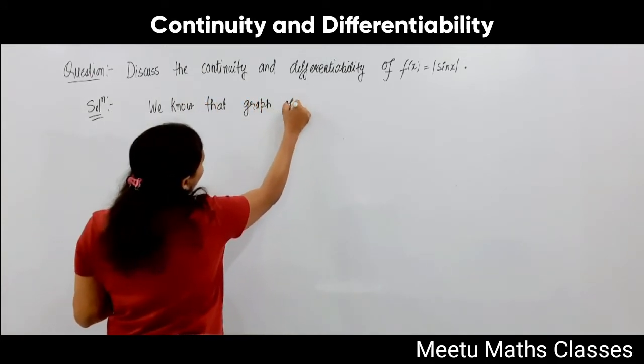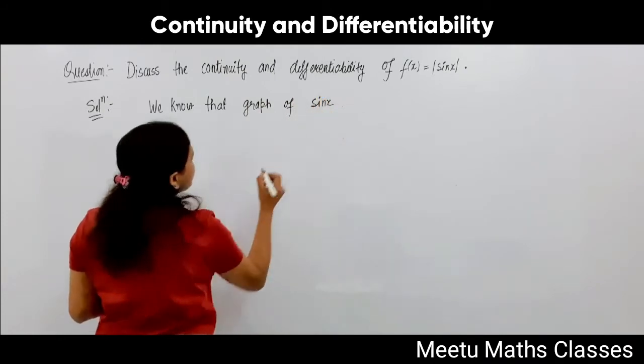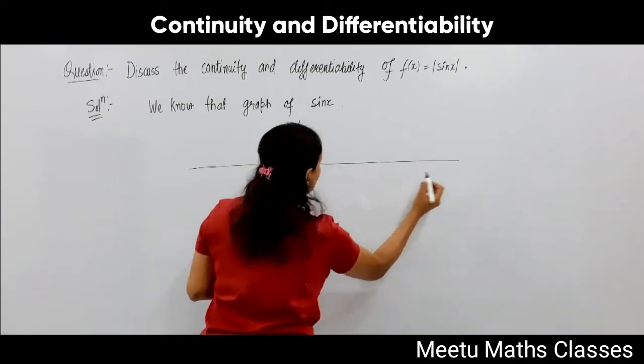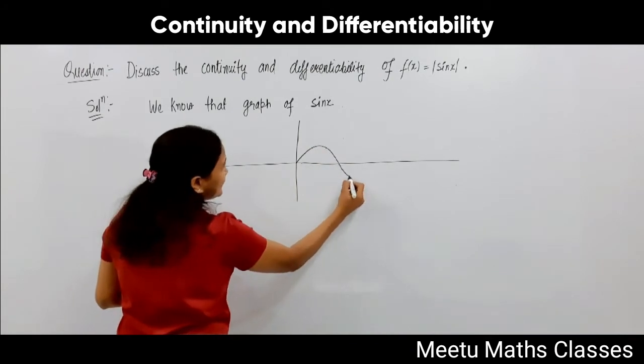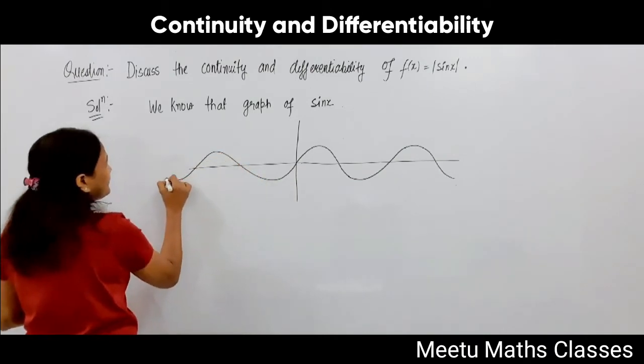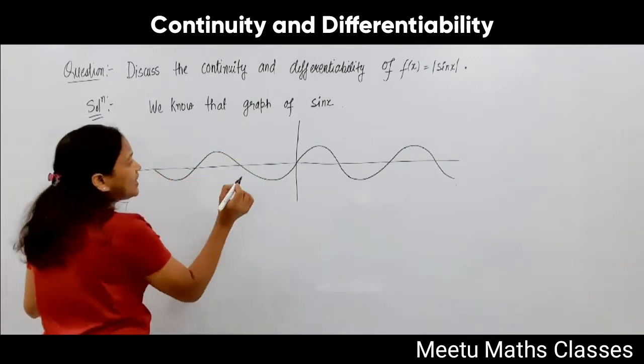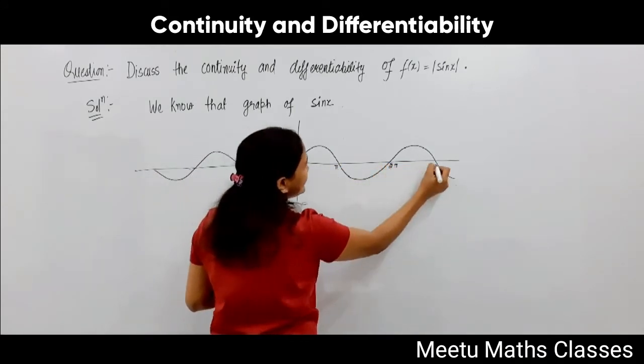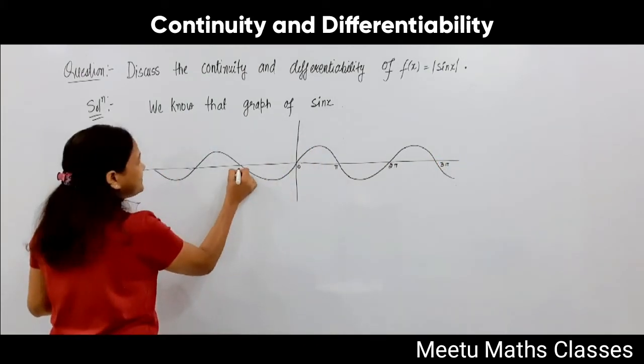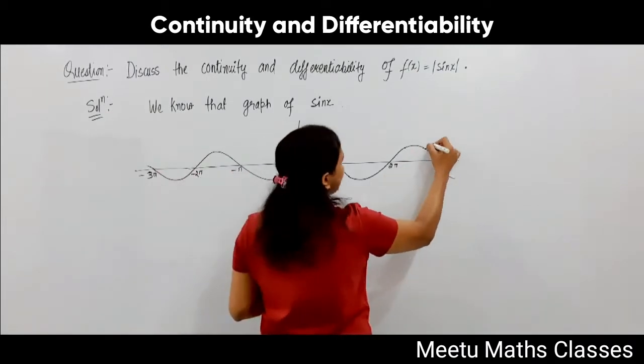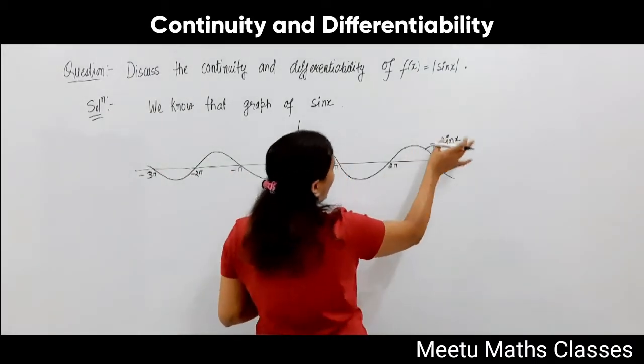The graph of sine x is a continuous function, obviously. This is the graph of sine x, crossing the x-axis at integral values of π: minus 3π and so on. This is the graph of sine x, but our function is modulus of sine x.